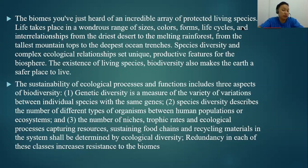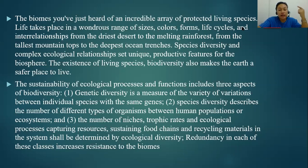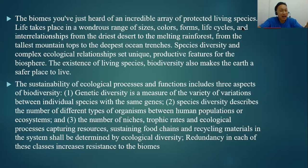Number one is genetic diversity — a measure of the variety of variations between individuals of the same species, from the study of genes. Our individual uniqueness comes from the genes of that individual species. Number two is species diversity, which describes the number of different types of organisms within a population or ecosystem — such as species of plants, grass, trees, and groups of animals like birds, mammals, and reptiles.